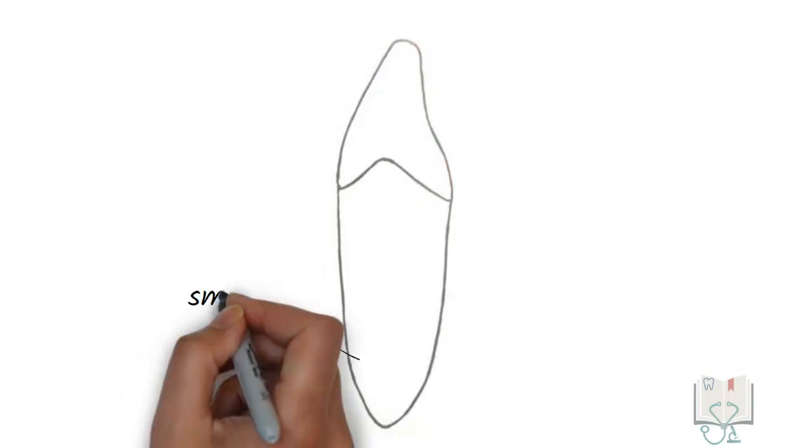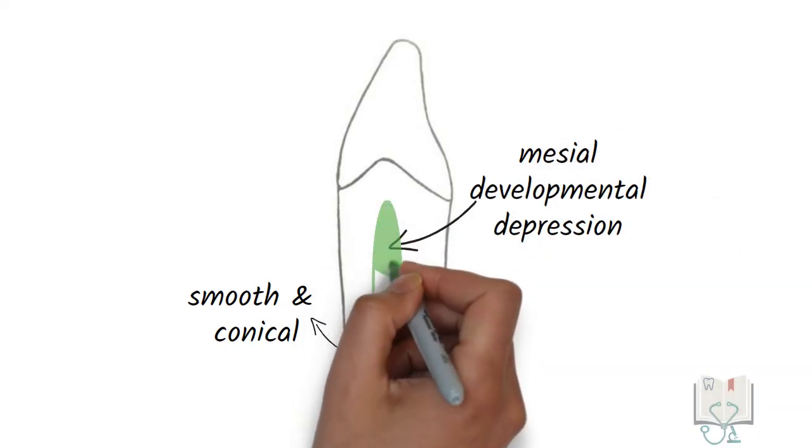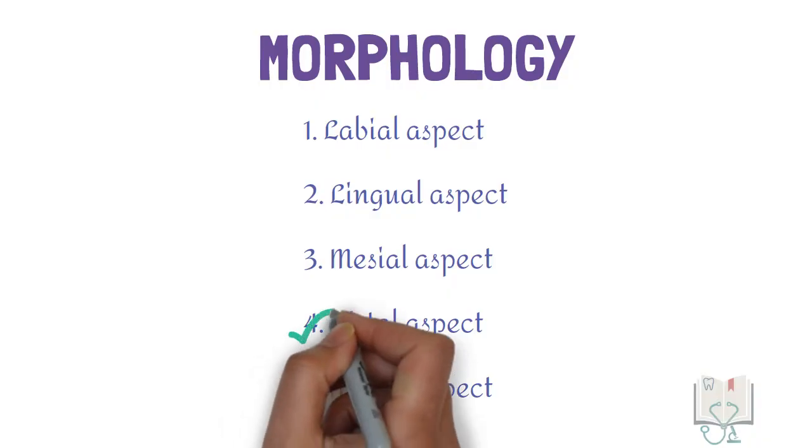Coming to the root, the root is smooth and conical in shape. A mesial developmental depression runs along the long axis of the root. Next, distal aspect.